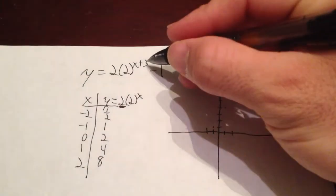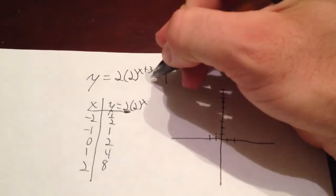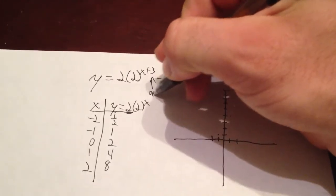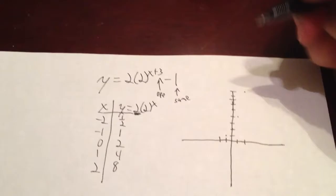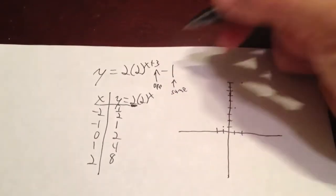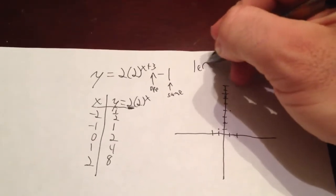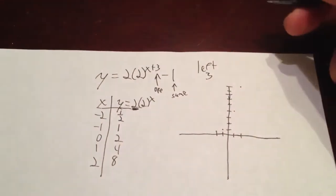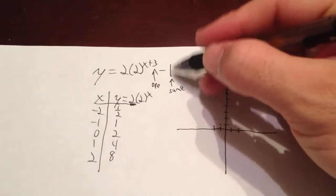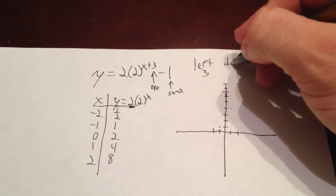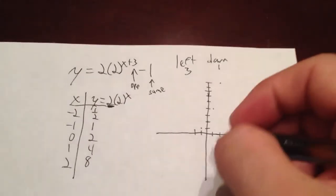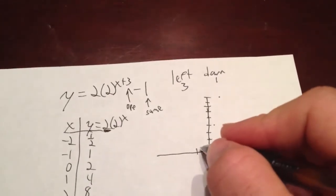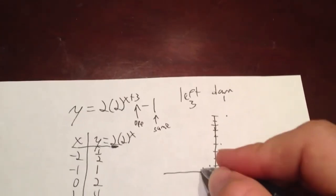So, the plus 3 and the minus 1, remember what we talked about. Remember we talked about how this guy right here, you take the opposite. This guy right here, you take the same. So, the opposite of 3 is going to be negative 3. So, this graph is going to move left 3 spaces, and then the same as negative 1 is negative 1. So, it's going to move down 1 space. So, you're going to take it, and you're going to take every single one of these points and move them left 3 and down 1.